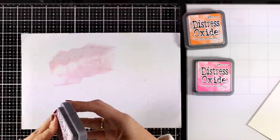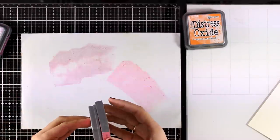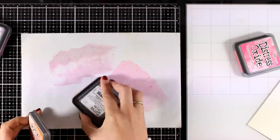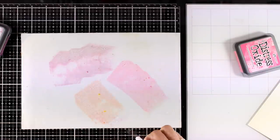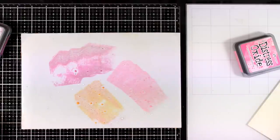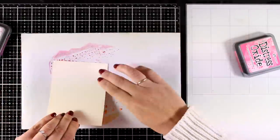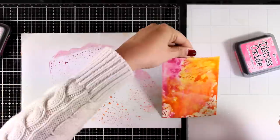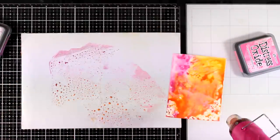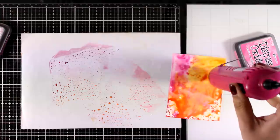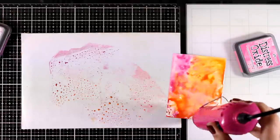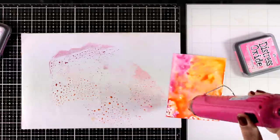I am going to make a window card, so through all those hearts you will be able to see a background that I am creating right now. I am using my Distress Oxide Inks and I have smooshed them on top of my non-stick craft mat. Now I am applying on top my paper. By the way, the paper that I am using here is the Mixed Media Paper by Ranger. I find that it works beautifully with Distress Oxide Inks.